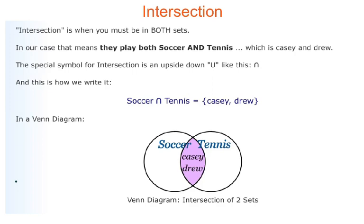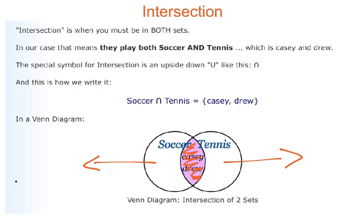Intersection is when you must be in both sets. In our case, that means they play both soccer and tennis, which is Casey and Drew. The special symbol for intersection is an upside-down U. So soccer intersect tennis gives Casey and Drew. Those are usually on the inside of the Venn diagram. Those who only play soccer are on the outside of one circle, those who only play tennis on the outside of the other, and those who play both — Casey and Drew — are in the middle.